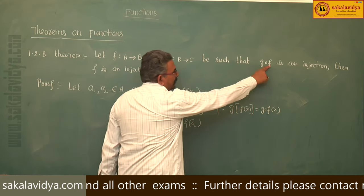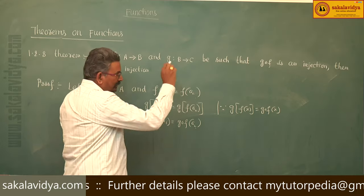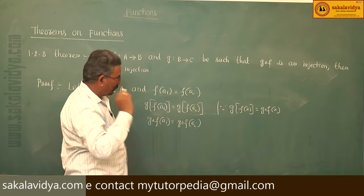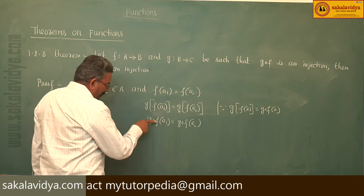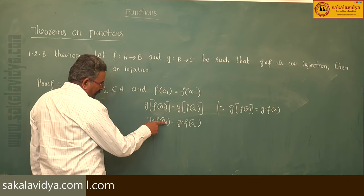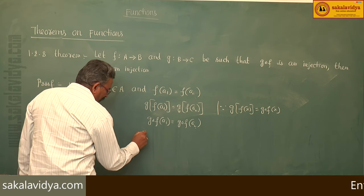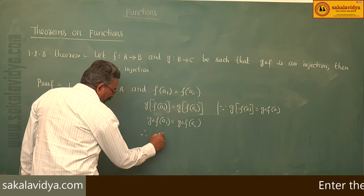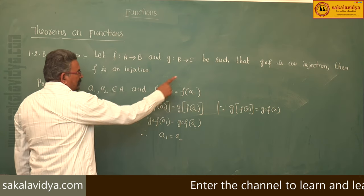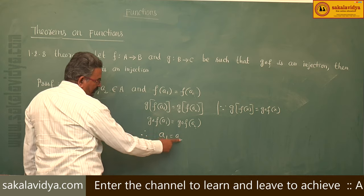Here, g circle f is an injection. So, using the test for injection, or one-to-one function: since g circle f is an injection, g circle f of a1 is equal to g circle f of a2 implies a1 is equal to a2. Therefore, f of a1 is equal to f of a2 implies a1 is equal to a2.